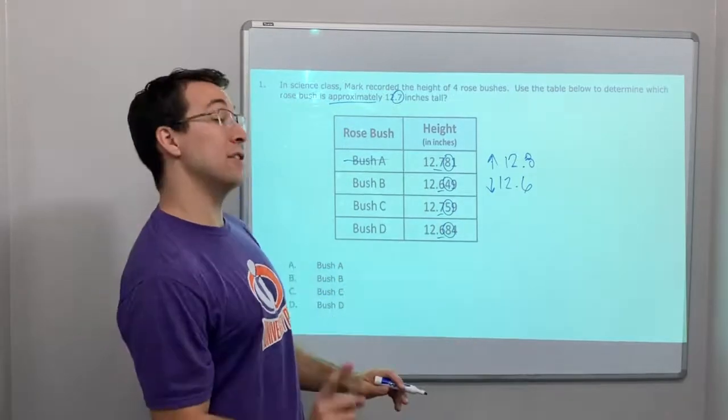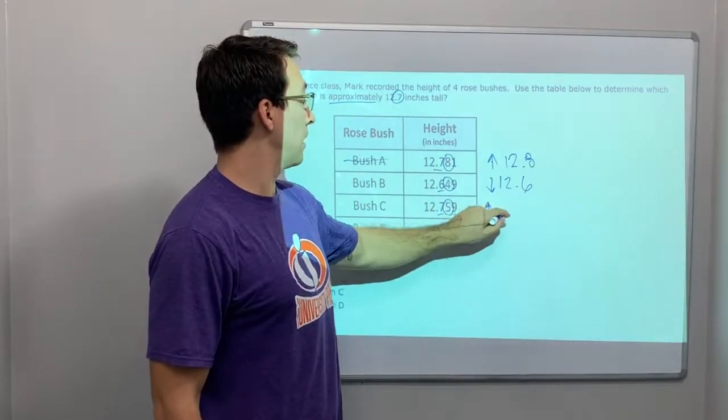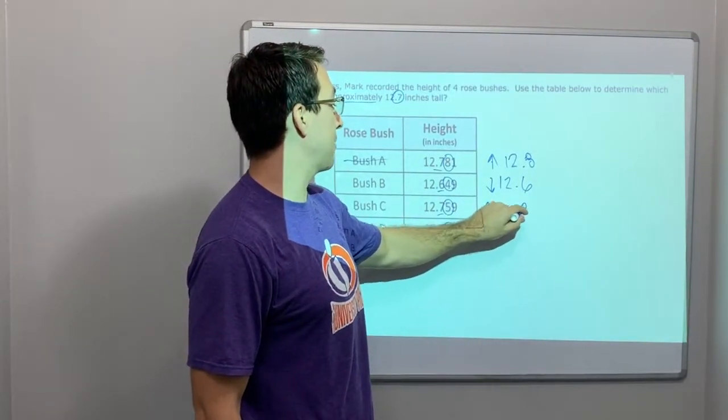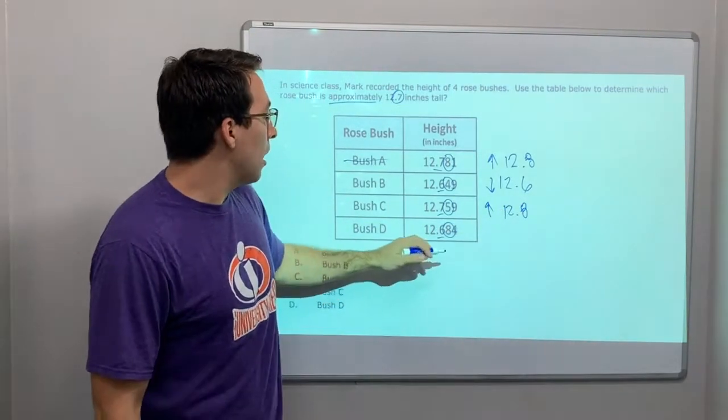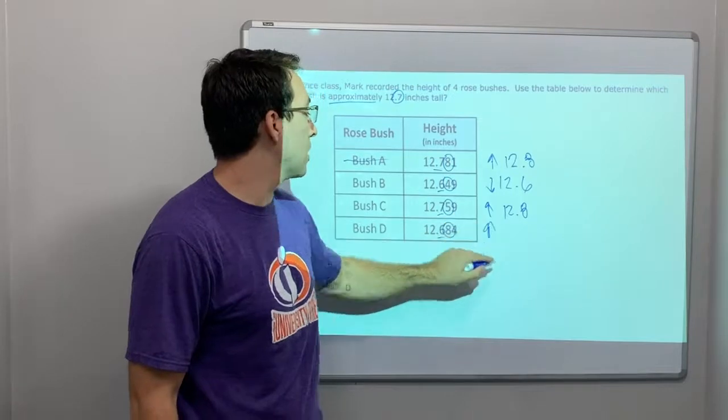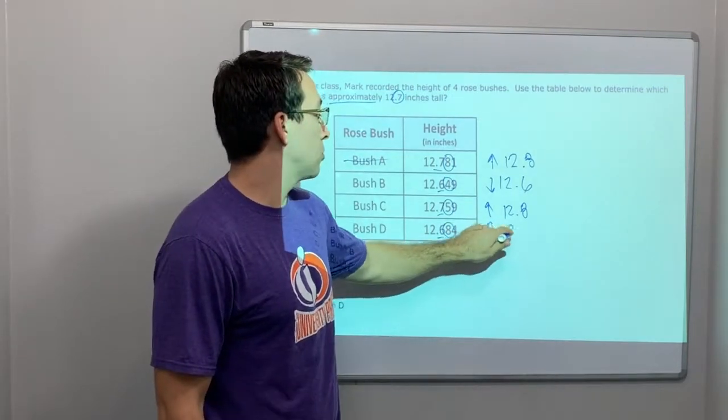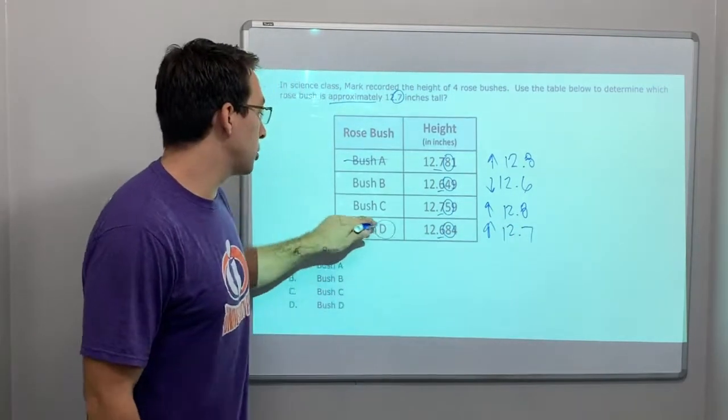12.75. Well, 5 goes up. Right? So, 12.75 is 12.8. 12 and 8 tenths. Oh, okay. 12. This is 8 goes up, right? 12.7. Rose bush D.